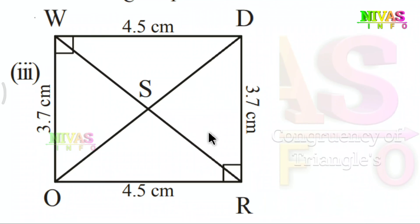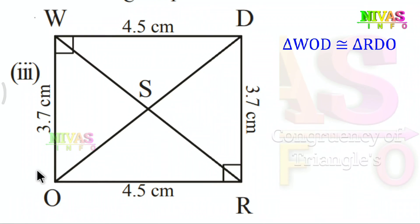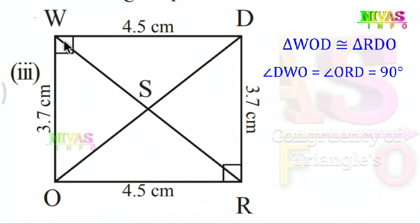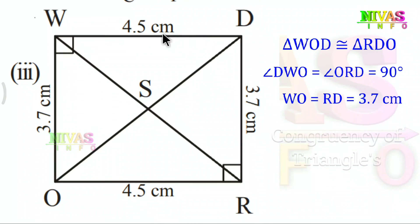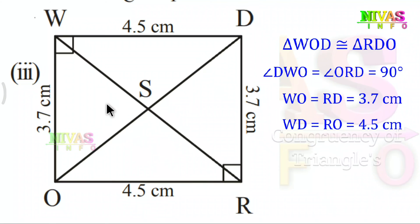This triangle is 90 degrees — triangle WDO and triangle RDO. Why are they congruent? Angle R is 90 degrees and angle W is 90 degrees, so both have 90 degrees. Also, one side is 3.7 centimeters in both, and another side is 4.5 centimeters in both. Here two sides are equal and one angle is equal — two sides, one angle — so by SAS, these two triangles are congruent.